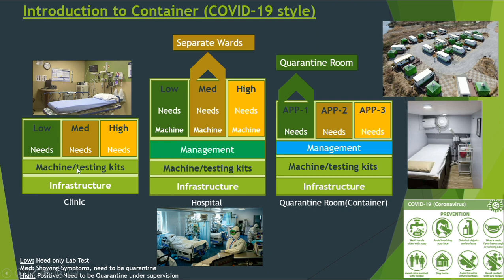The clinic already has machines and testing kits certified from a government organization. On top of that there will be three types of patients. First is low — someone who just has assumptions that he might be affected with coronavirus and came to the clinic to have a test to check if he is positive or negative. He will need a machine or testing kit at least to have that test.